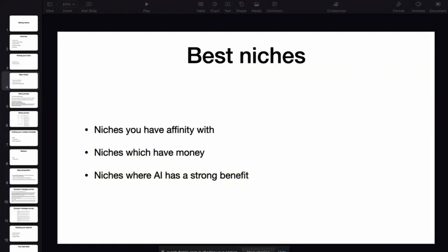The second criteria to consider is to work with niches where businesses have money. Obviously, there are some types of businesses that don't generate a lot of revenue or profit, so it's going to be harder to sell your service to those types. And finally, the last criteria is to try to focus on niches where AI has a strong benefit. I'm going to show you how to find these kinds of niches using a simple prompt.